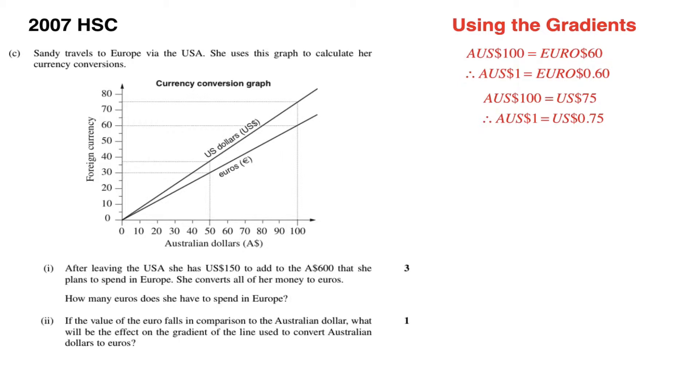So using the gradients, we can see that 100 Australian dollars is the equivalent of 60 Euro dollars and that means that one Australian dollar would be the equivalent of 0.6 Euro dollars. Likewise, 100 Australian dollars is the equivalent of 75 US dollars, and that means that one Australian dollar would be the same as 0.75 US dollars and that's taken using those dotted lines that are put on those graphs.